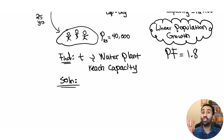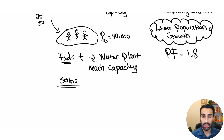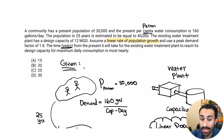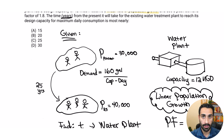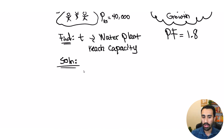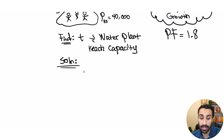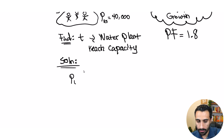Now for the solution — where do we start? Population projection. This is in the handbook, and the problem tells us we have a linear rate of population growth, so we're going to start with that formula. It's under population modeling — the linear population projection or algebraic projection. The formula is: Pt equals P0 plus k times delta-t.